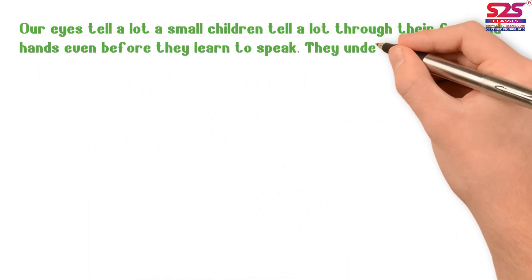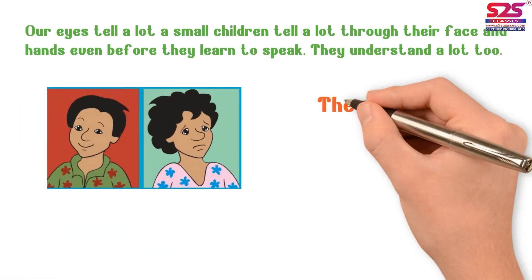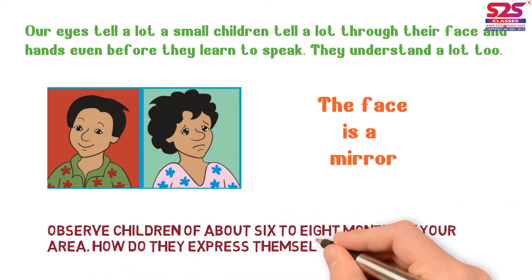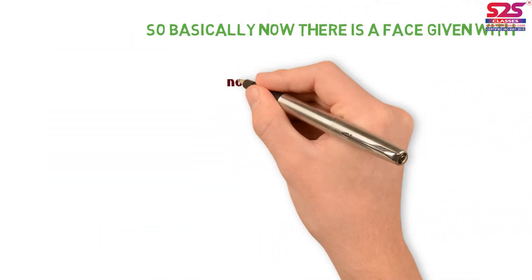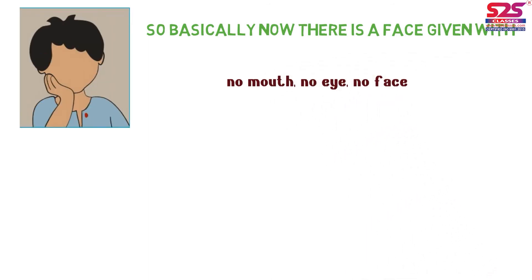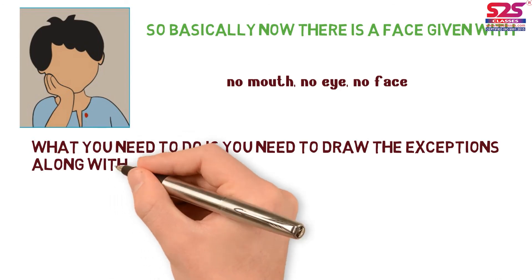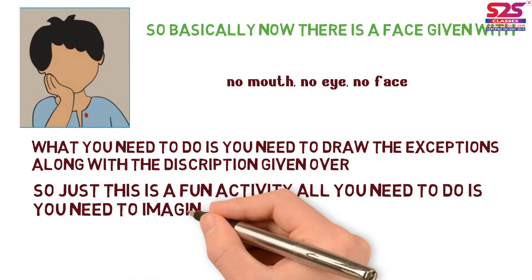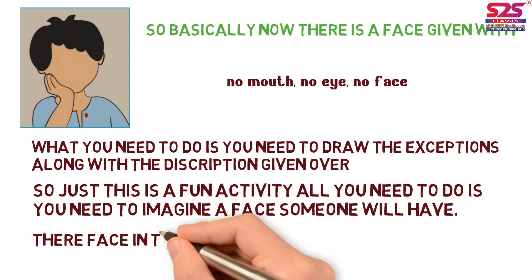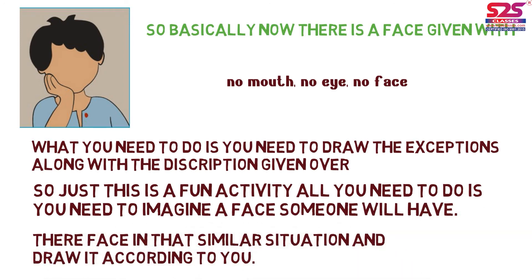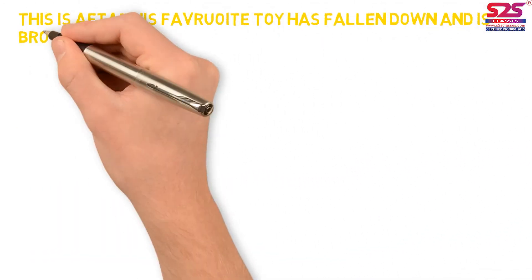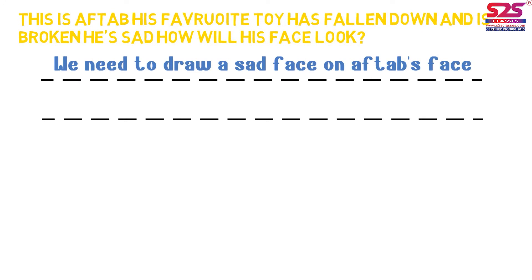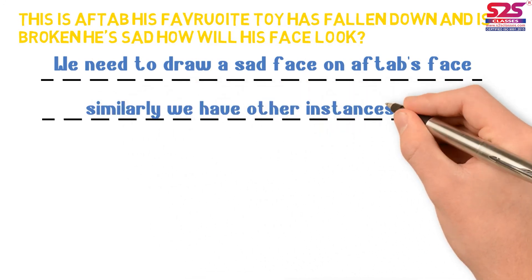Small children tell a lot through their face and hands even before they learn to speak, and they understand a lot too. Now there is an activity called 'The Face is a Mirror.' You need to observe children of about six to eight months and how they express themselves. A face is given with no mouth and no eyes — you need to draw the expression along with the description given. For example, Aftab's favorite toy has fallen and broken — he is sad. Draw a sad face on Aftab's face. There are other similar instances to draw as well.